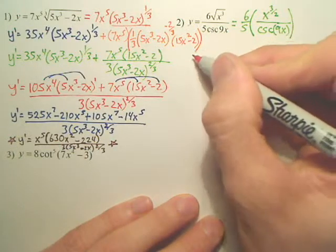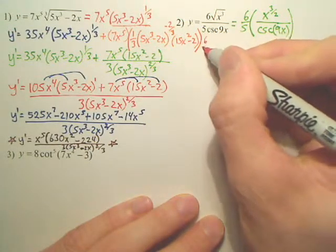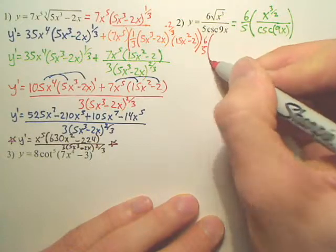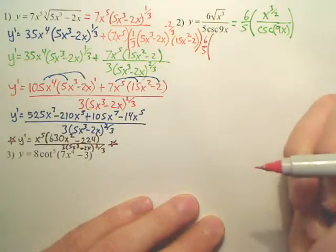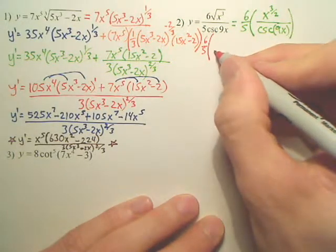And we're going to have to do something here. So we're going to leave the six-fifths out front. And we're doing a quotient rule.